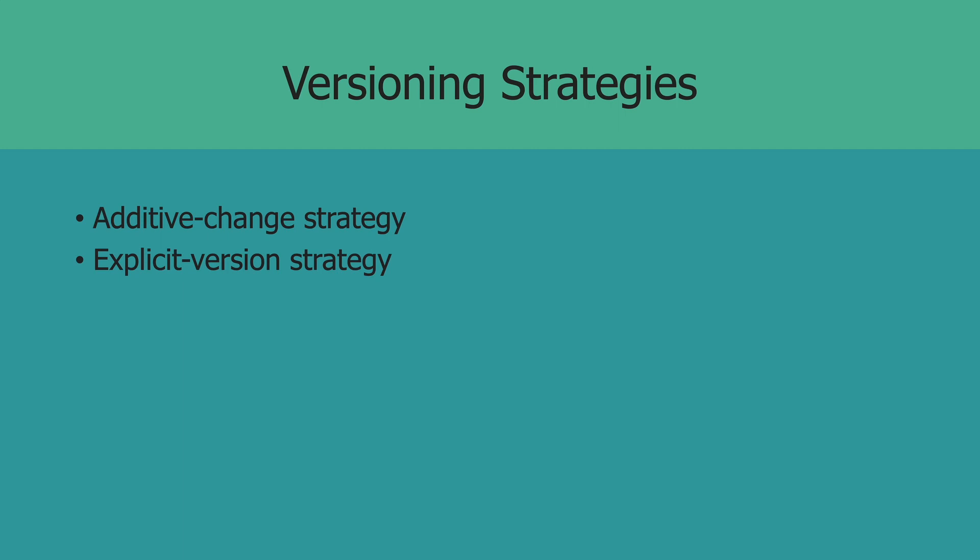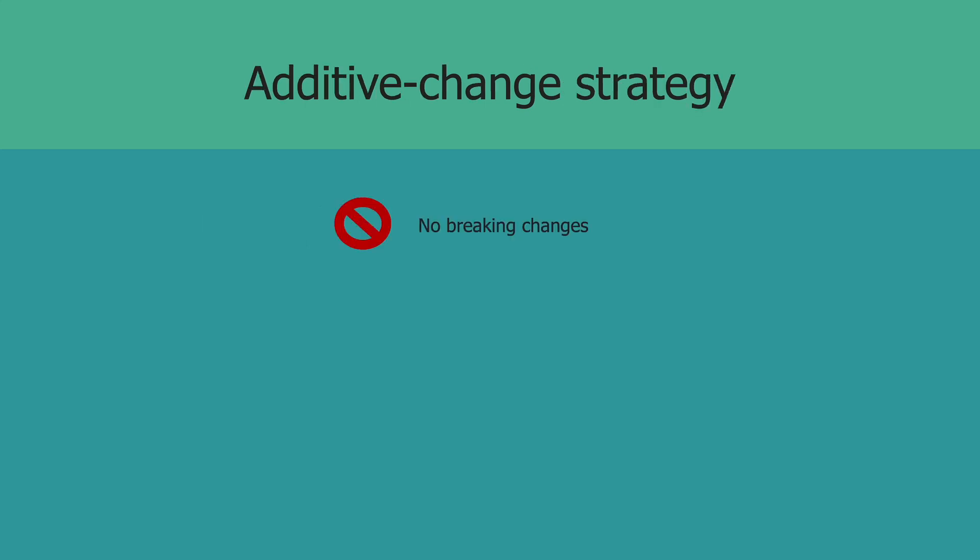So we've talked about what API versioning is and why you need it. Now let's talk about some possible approaches we can use for versioning. There is additive change strategy, which is the main focus of this video today. But there is also explicit version strategy. This approach is far more commonly used, especially in enterprise applications. I'll make another video talking about this strategy because there's quite a lot to cover. So let's move on to additive change strategy.